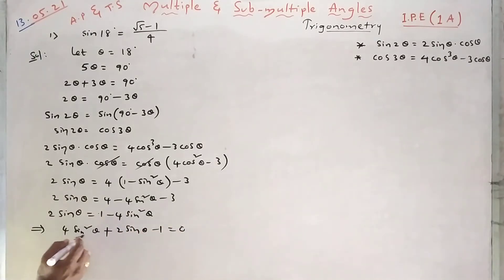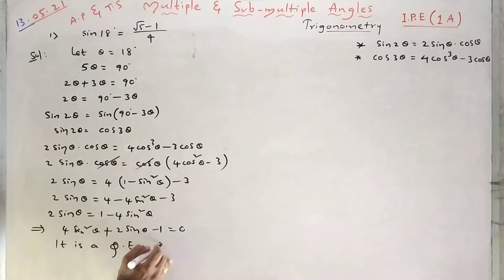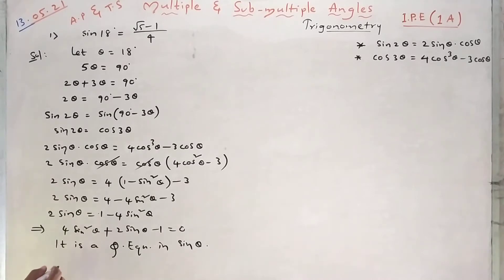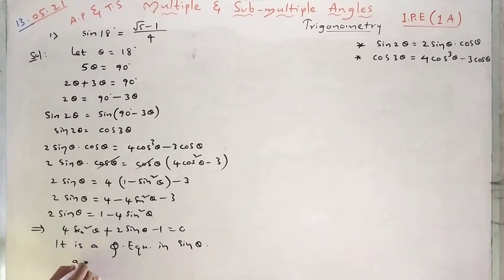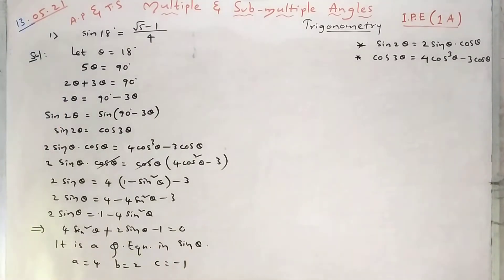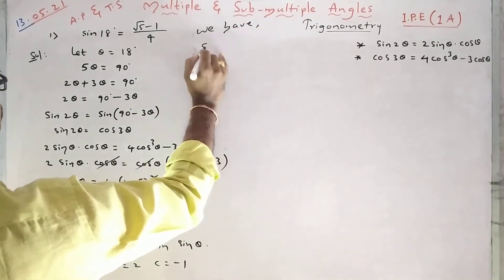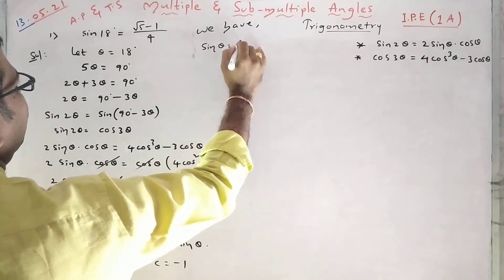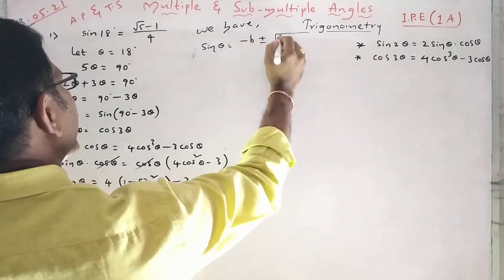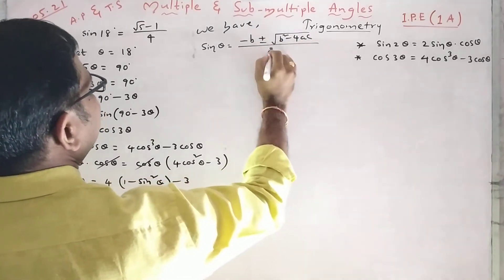This is a quadratic equation in terms of sin theta. We know how to solve a quadratic equation of the form ax² + bx + c = 0. Comparing, we get a = 4, b = 2, c = −1. We have the formula: sin theta equals minus b plus or minus square root of b² minus 4ac, all divided by 2a.